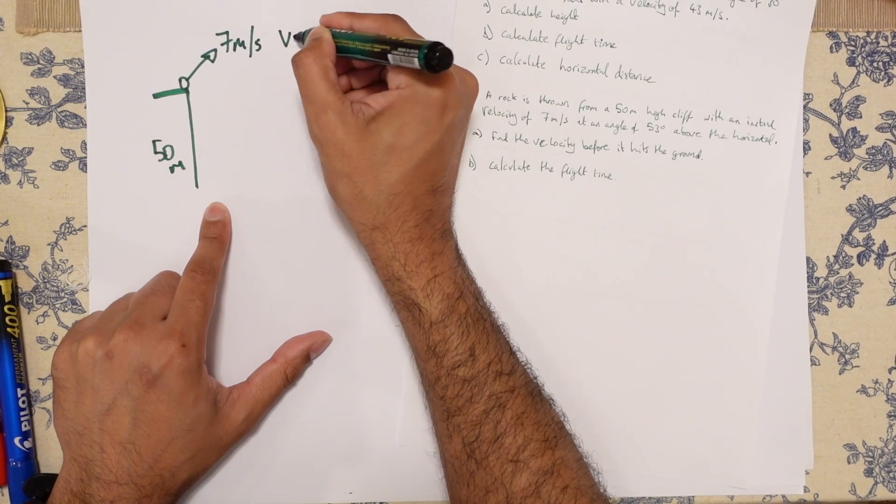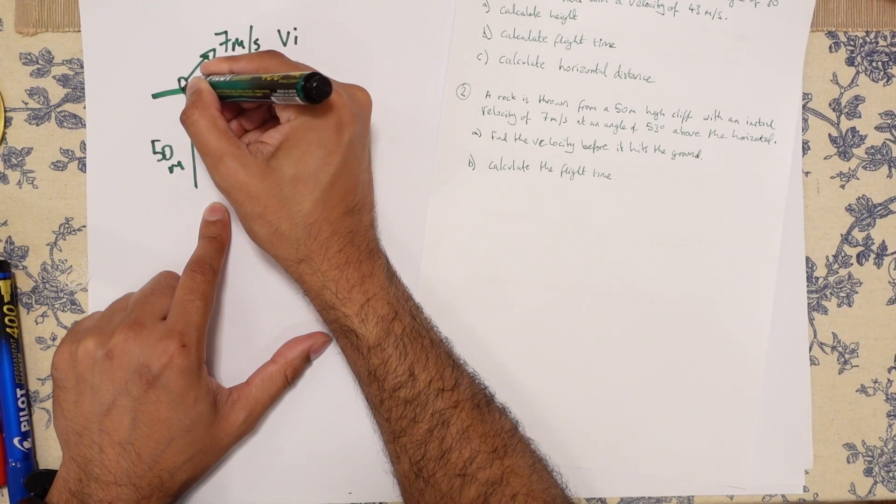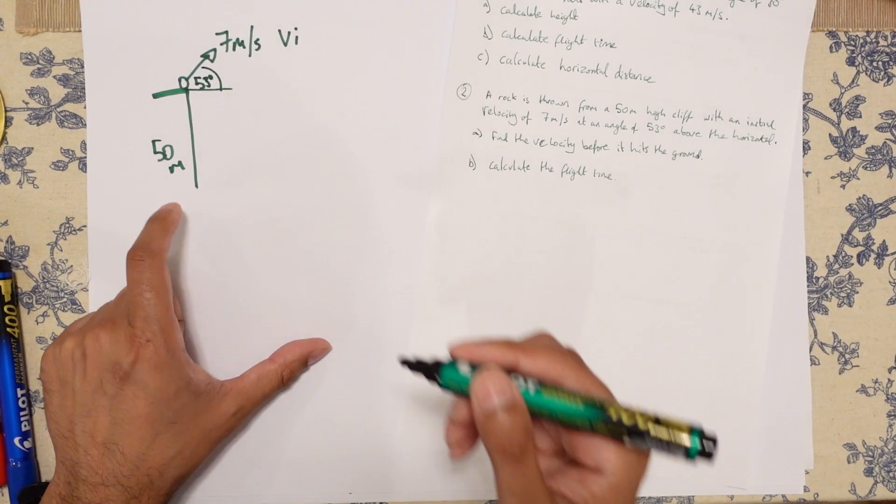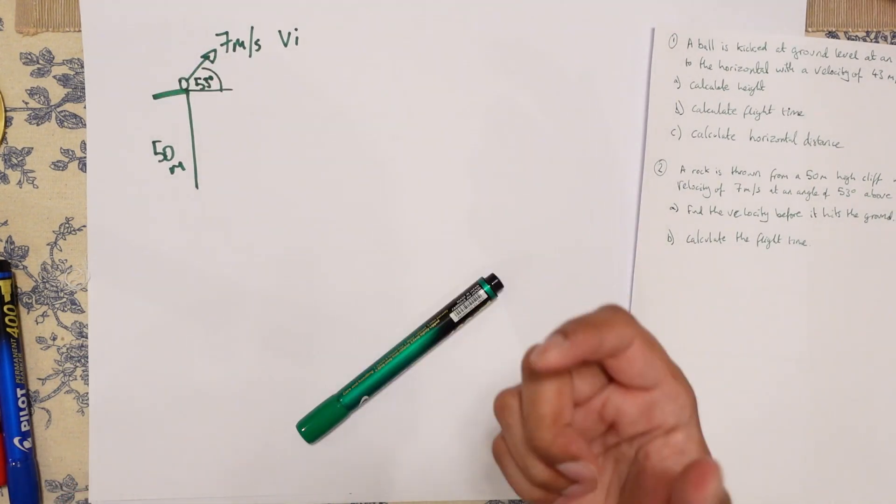And it is 53 degrees above the horizontal like so. Now the reason why this is a little bit tricky is because it is above the ground. So effectively what's going to happen is it's going to go like that.